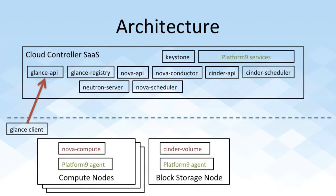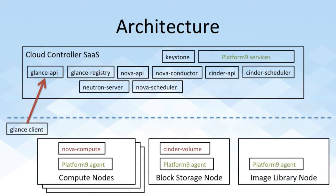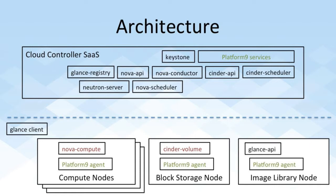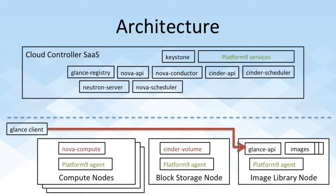So we tried to solve this problem by defining a new role for a server host, and we call that the image library. Once the customer has set up an image library host, what we do is we run the Glance API service not on the controller anymore but on that host. We also reconfigure Keystone to advertise a local endpoint for the Glance API service. This way, the next time a client connects to Glance API, it will take the local route and images will end up being stored locally, which is good for security and also performance.